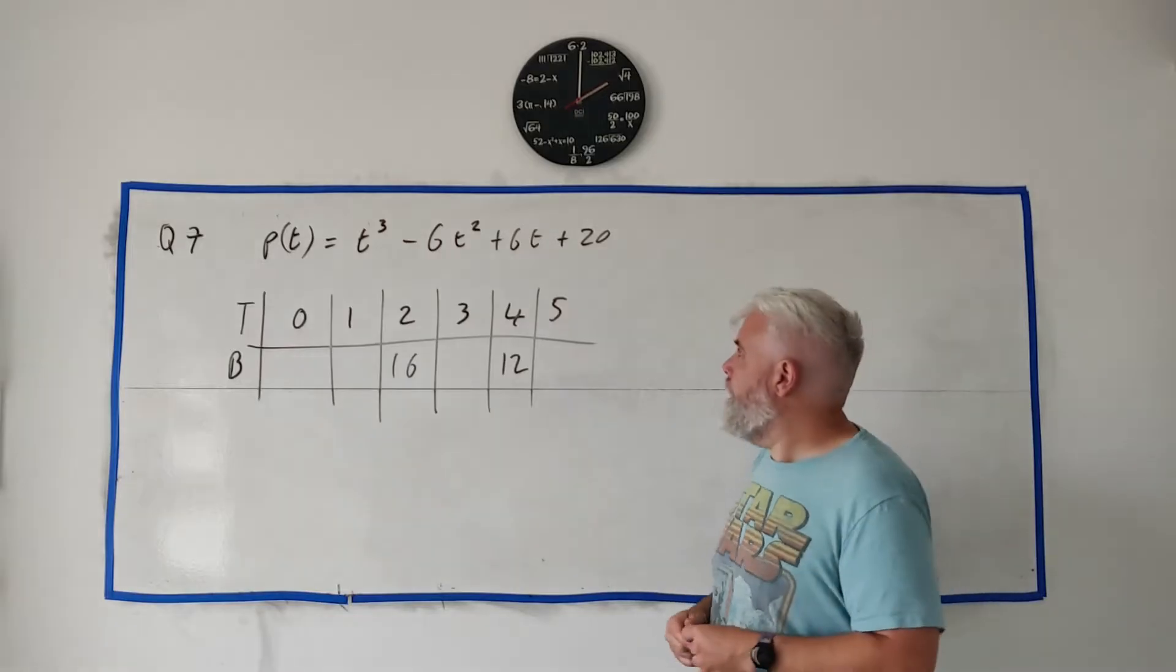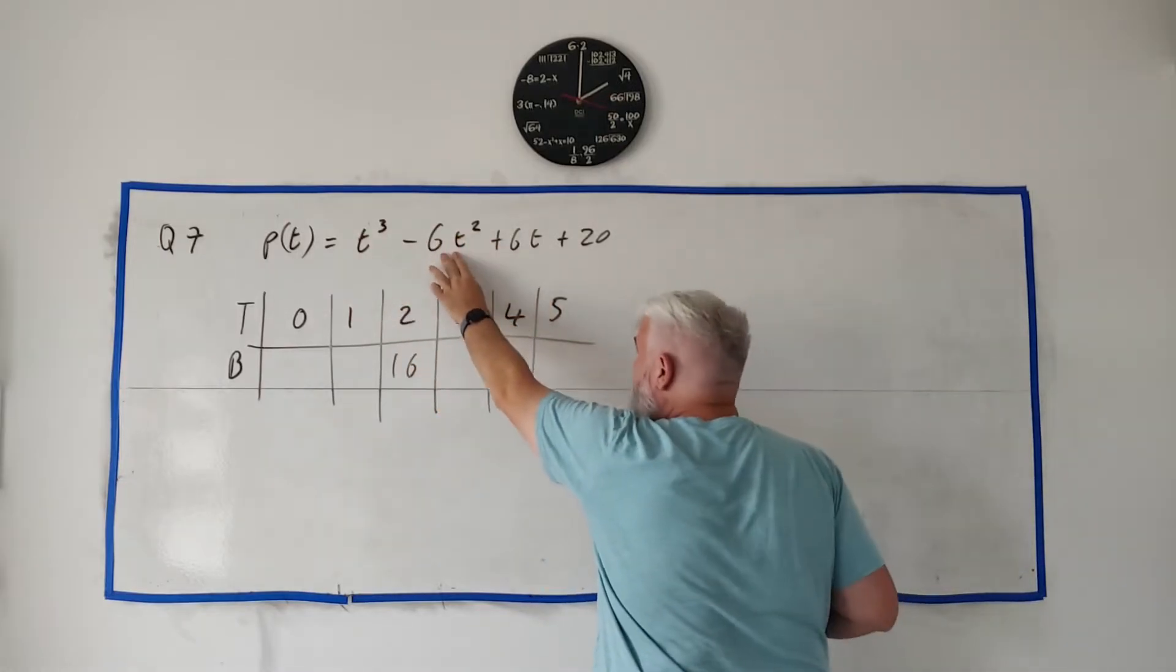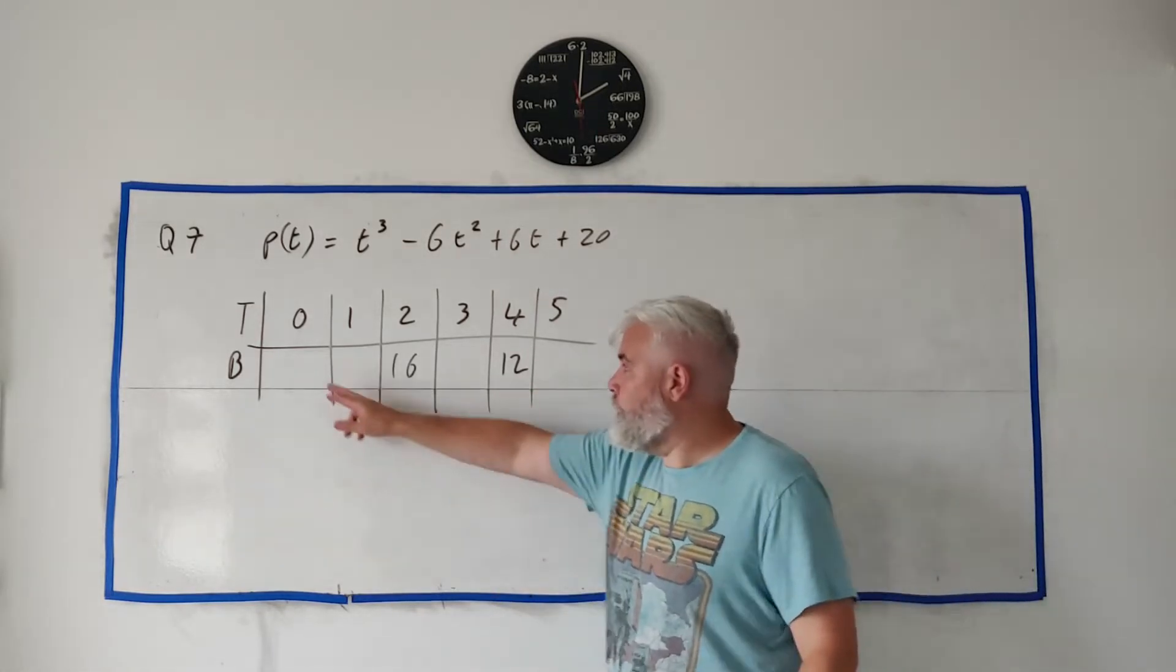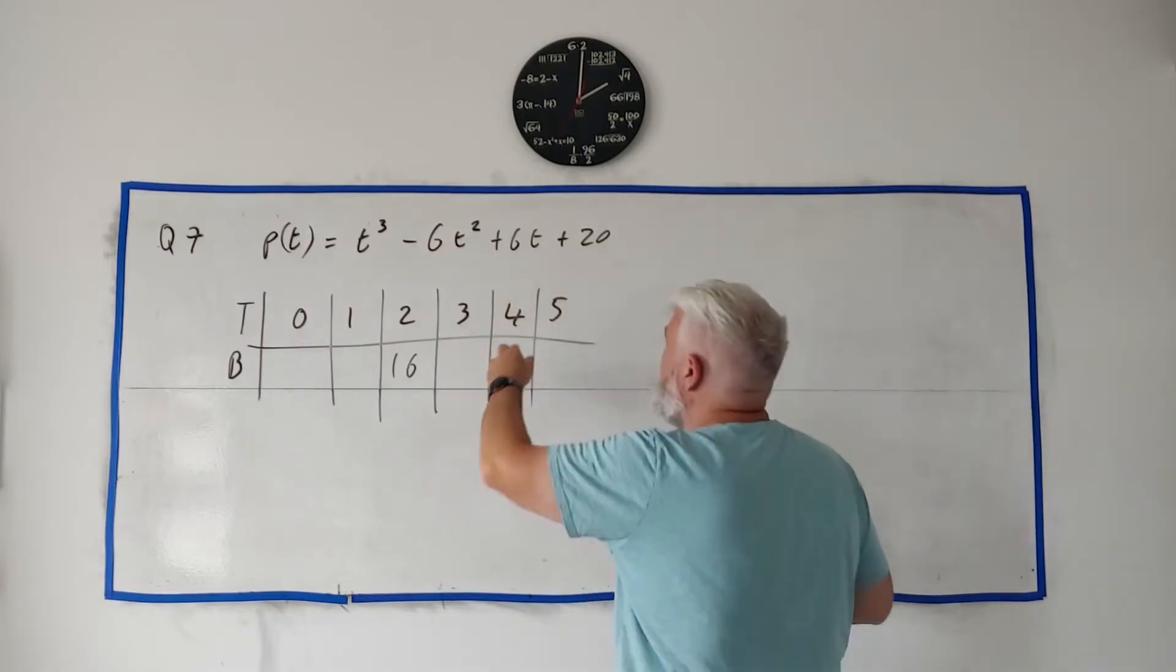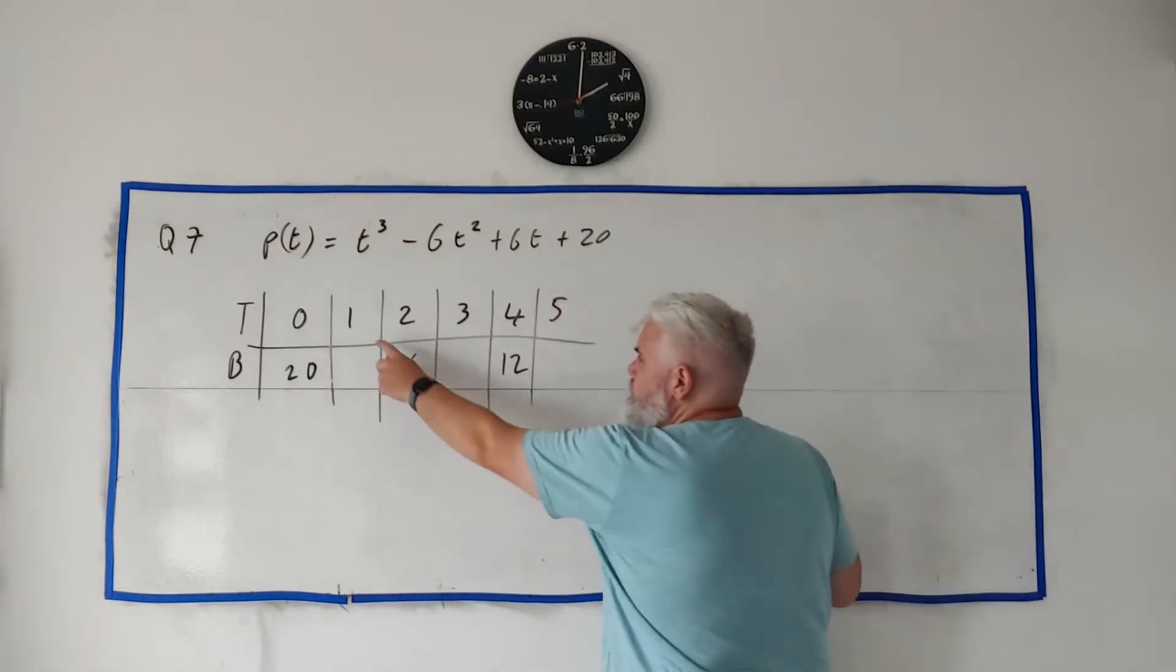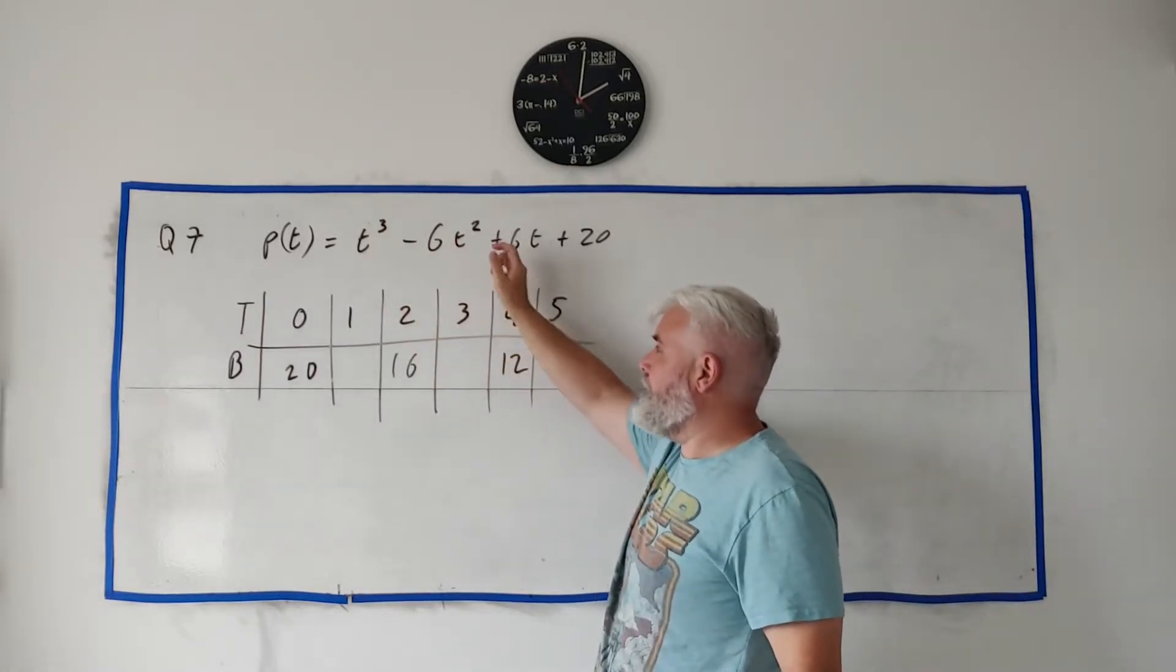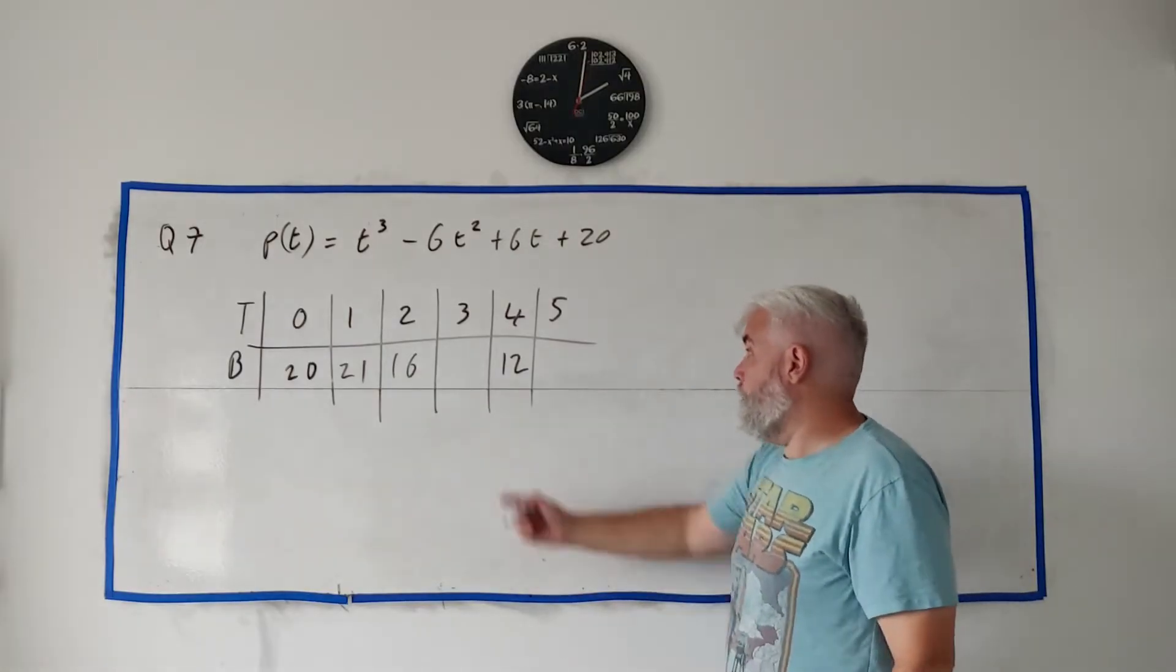How did they get 16 and 12? They simply put 2 into this equation, and if you put 2 in you get 16. Same with 4. So that's all we need to do: put each of these numbers in here. 0 is very easy: 0 times 0 times 0, 0 times 6, plus 20. First one is plus 20, very easy. Second one, fairly easy as well: 1 cubed is 1, 1 squared is 1, and 1 is 1. So we just need 1 minus 6 plus 6, they cancel, so we get a 1 and a 20, we get 21.